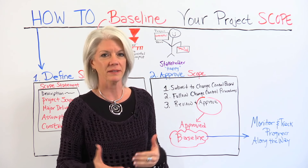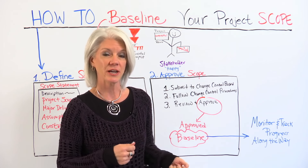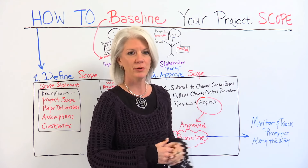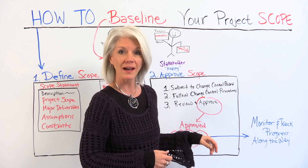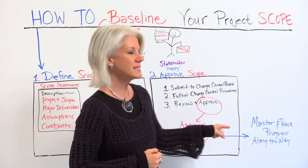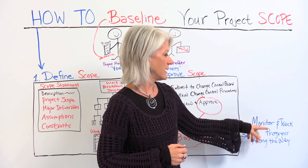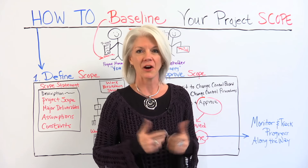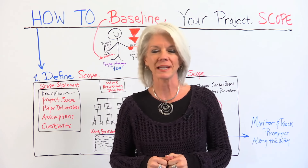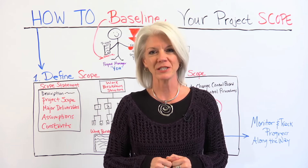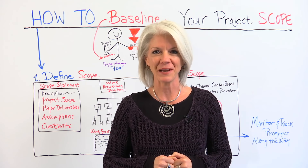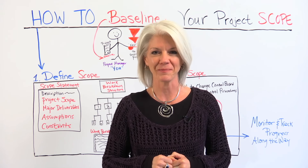They make sure the scope is agreed upon and meets all of the objectives. If there are any changes, they address them at that time. But once they approve it, that's our baseline. The baseline is then used to monitor and track the project all along the way. If you need a tool to help you baseline your project scope, sign up for our software at projectmanager.com.